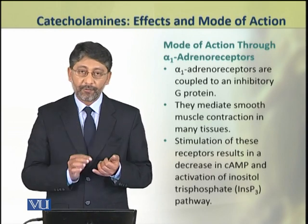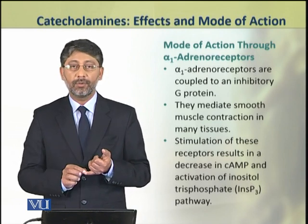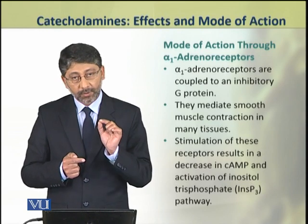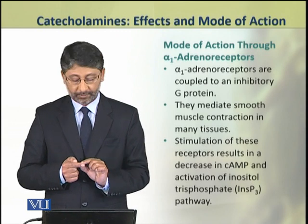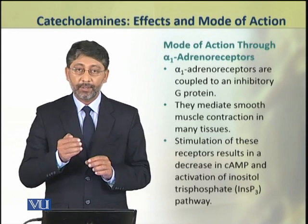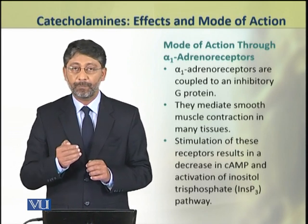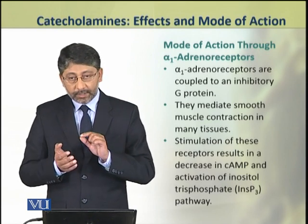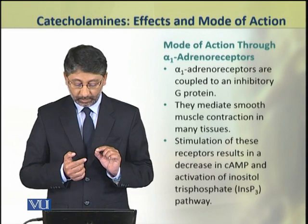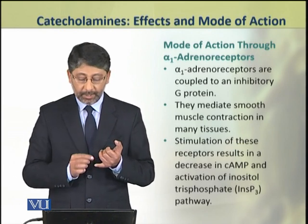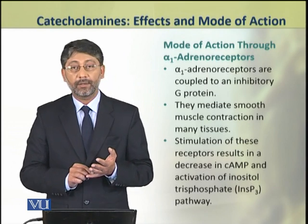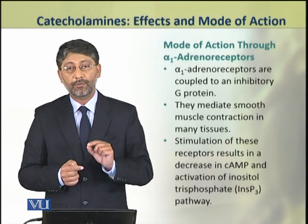First, we will study the mode of action of catecholamines by binding through alpha-1 adrenoreceptors. These receptors are coupled to a G-protein which is inhibitory in its actions, meaning it decreases the concentration of cyclic AMP after its activation. These alpha-1 adrenoreceptors mediate smooth muscle contraction in many tissues. After their stimulation, the concentration of cyclic AMP is reduced in the cell, and also the inositol trisphosphate pathway is activated.